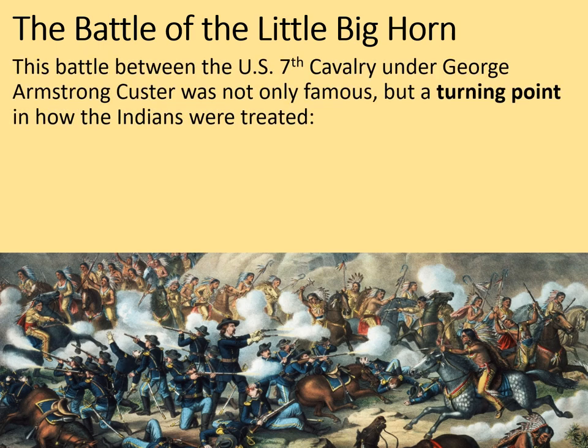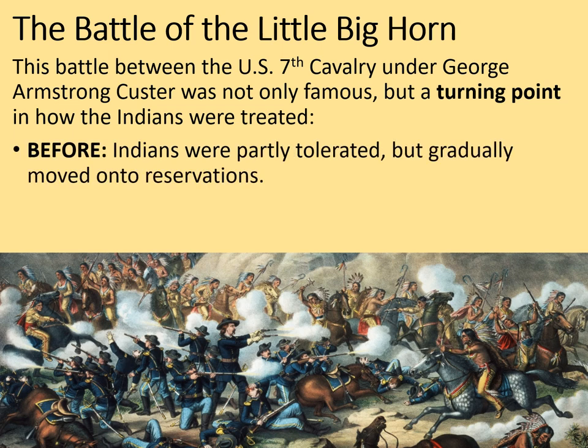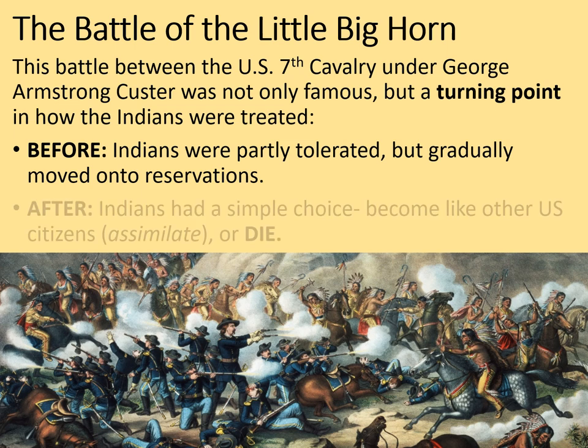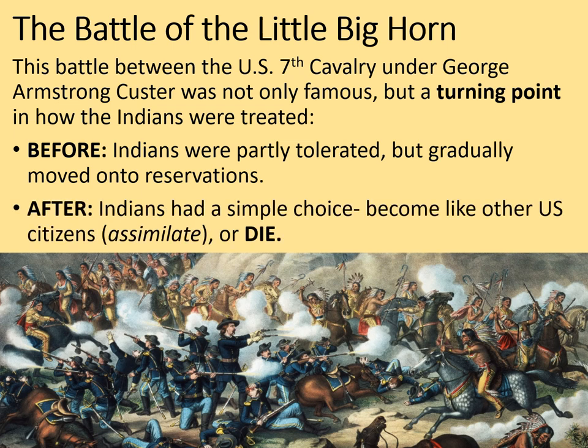This was a battle between the US 7th Cavalry under George Armstrong Custer, and it was not only famous, but it was a turning point in how the Indians were treated. Before, broadly speaking, Indians were partly tolerated but gradually moved onto reservations — though there were still horrendous events like the Sand Creek Massacre. However, after the Battle of the Little Bighorn, Indians were given a simple choice: either assimilate and become like other US citizens, or die — whether by starvation or under the guns of the US Army.